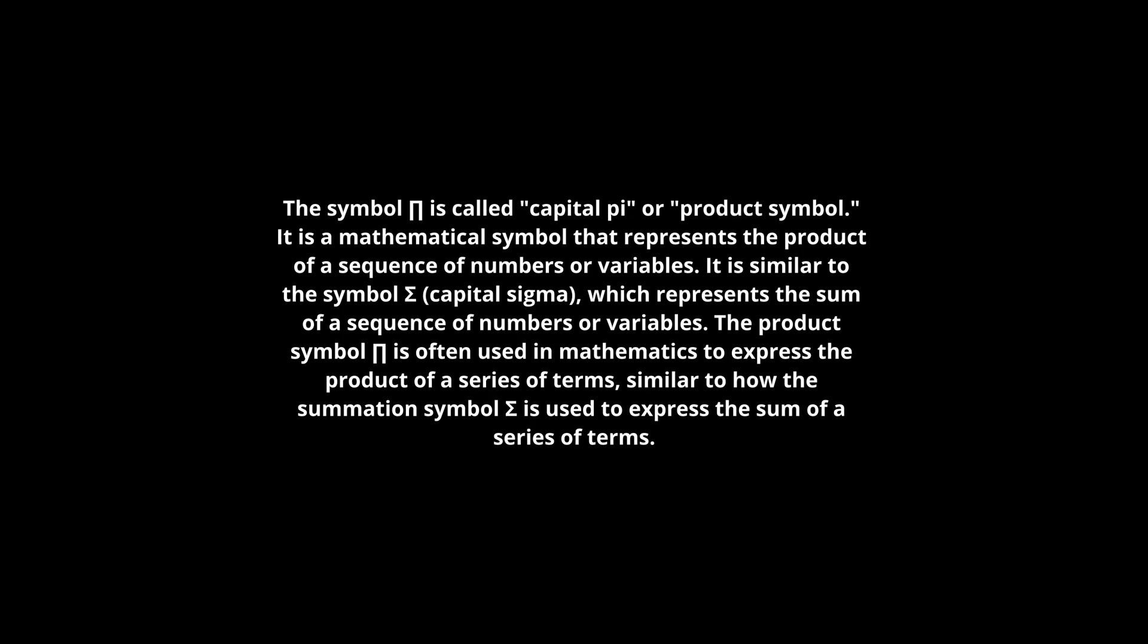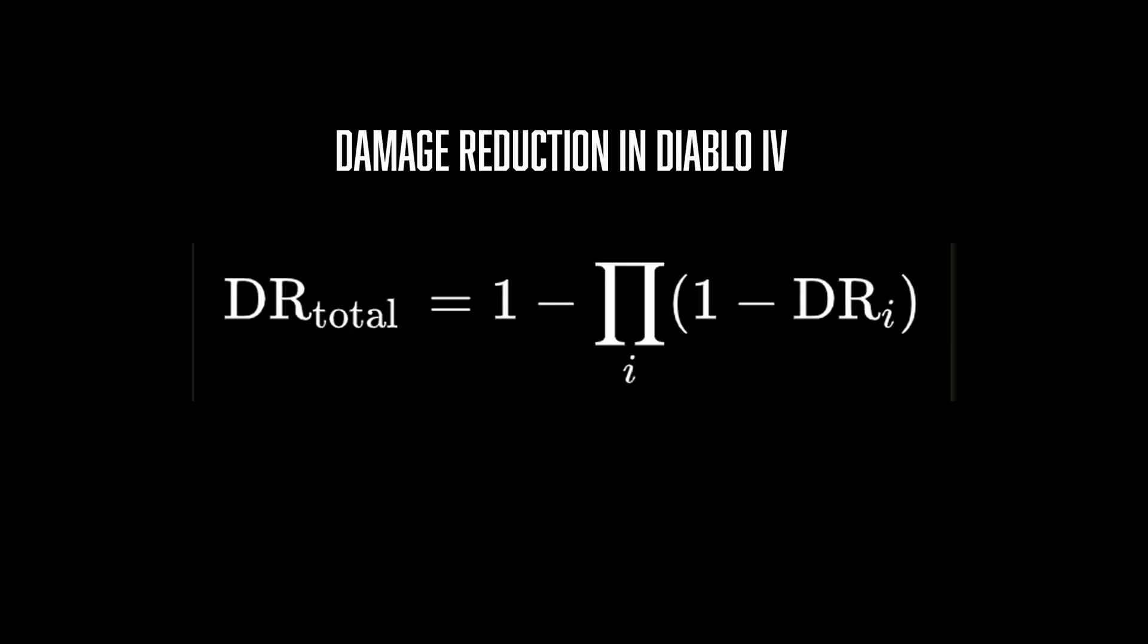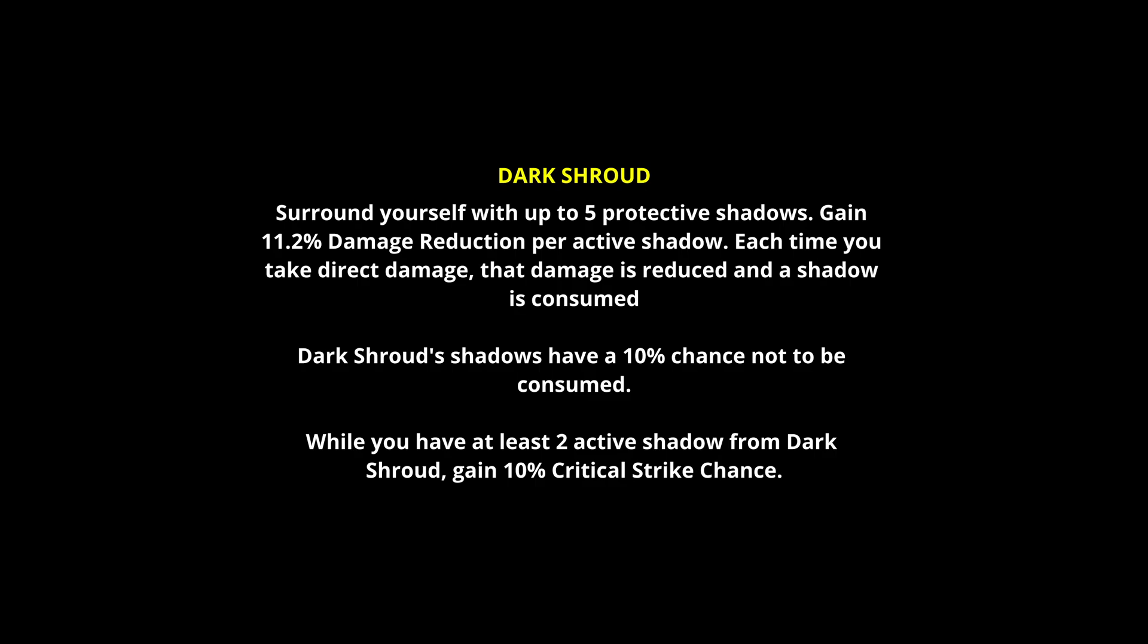But it doesn't mean there is no additive damage reduction—it does exist. For example, if you have passives, or if you're using the Rogue skill Dark Shroud which gives you stacking damage reduction for each shadow that you have, that one is actually additive. But generally speaking, the calculation of damage reduction based on what I understand is multiplication.